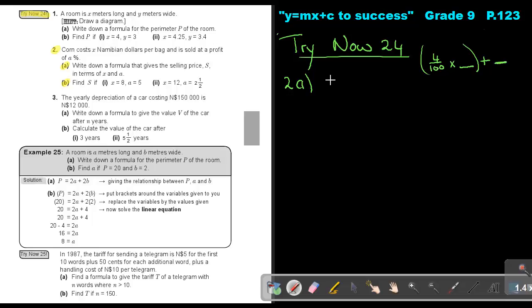I will take the percentage, that's A, and put it over 100 because it's percentage. Then I multiply it with that X Namibian dollars. And then I will increase it with that same amount. So A times X is AX, over 100 plus X. That is my formula for the increase. So if I say to you, write down a formula that gives the selling price, that will be the selling price: S equals AX over 100 plus X.